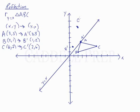So now we can draw our triangle. And we have our reflection of ABC over the line y equals x to form the image A', B', C'.